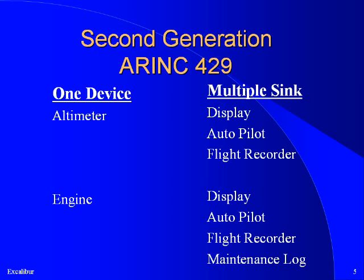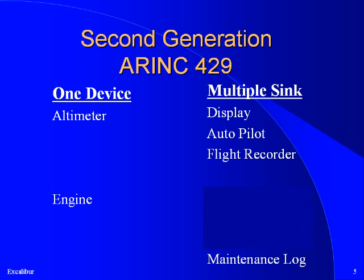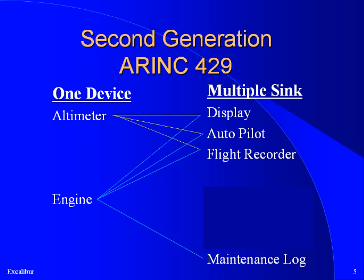As aircraft got more sophisticated and safer, more devices were added that needed to share information. The altitude in a modern aircraft is needed not only by the pilot, but by the autopilot and flight recorder as well. An engine may communicate with all those devices plus send data to a maintenance log. In the 1980s, ARINC 429 was introduced, bringing together a number of similar specifications that had been introduced piecemeal over the previous few years. ARINC 429 connected a wire directly from any device needing to send data to any device needing to receive that data. As long as the number of devices were fairly small and the distance between them fairly short, this was a simple and elegant solution.